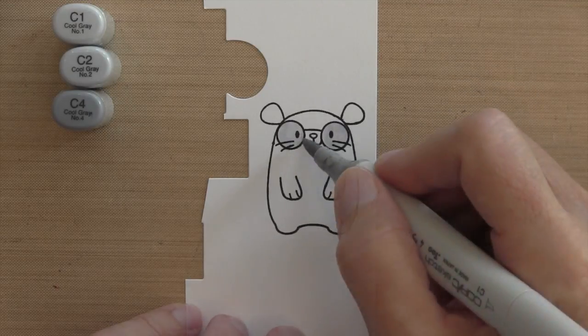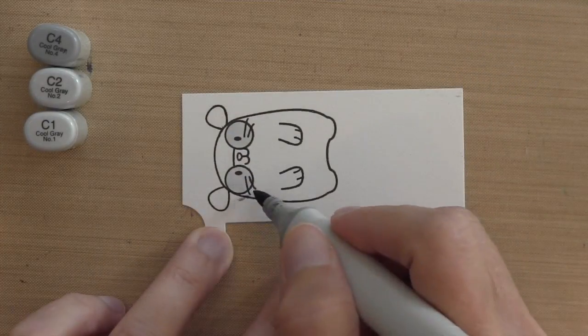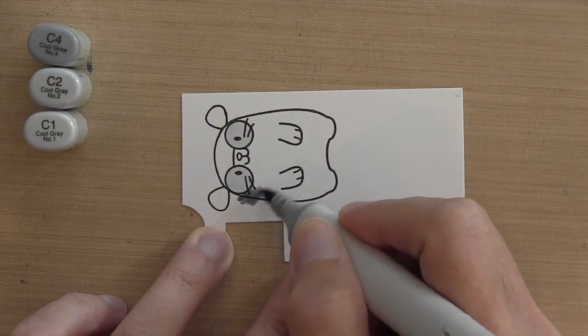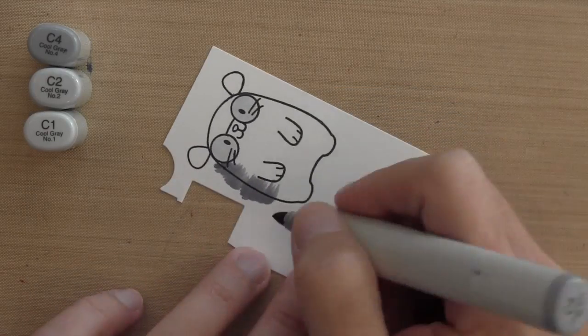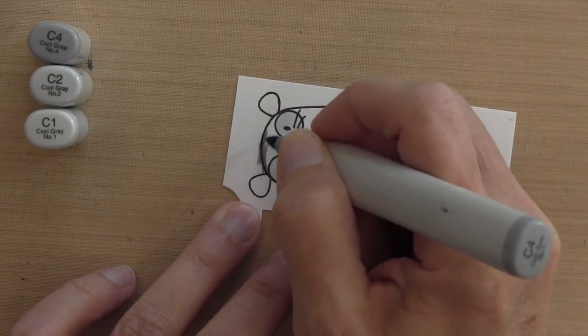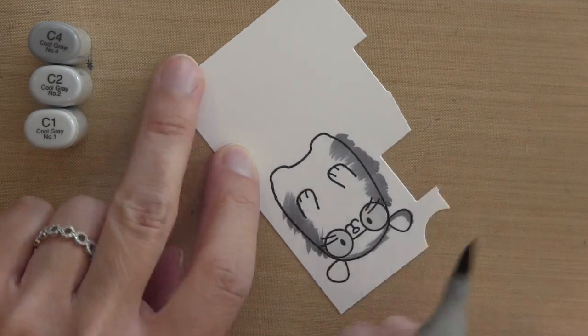First, I'm going to start by coloring the glasses with C1. And I'm just going to trim that off so I can turn it around and you can see it easily. And now I'm going to start with the C4. It's just my darkest gray color. I'm just flicking upward. Because I'm cutting him out, I'm not too worried about staying in the lines, which makes this coloring really easy.